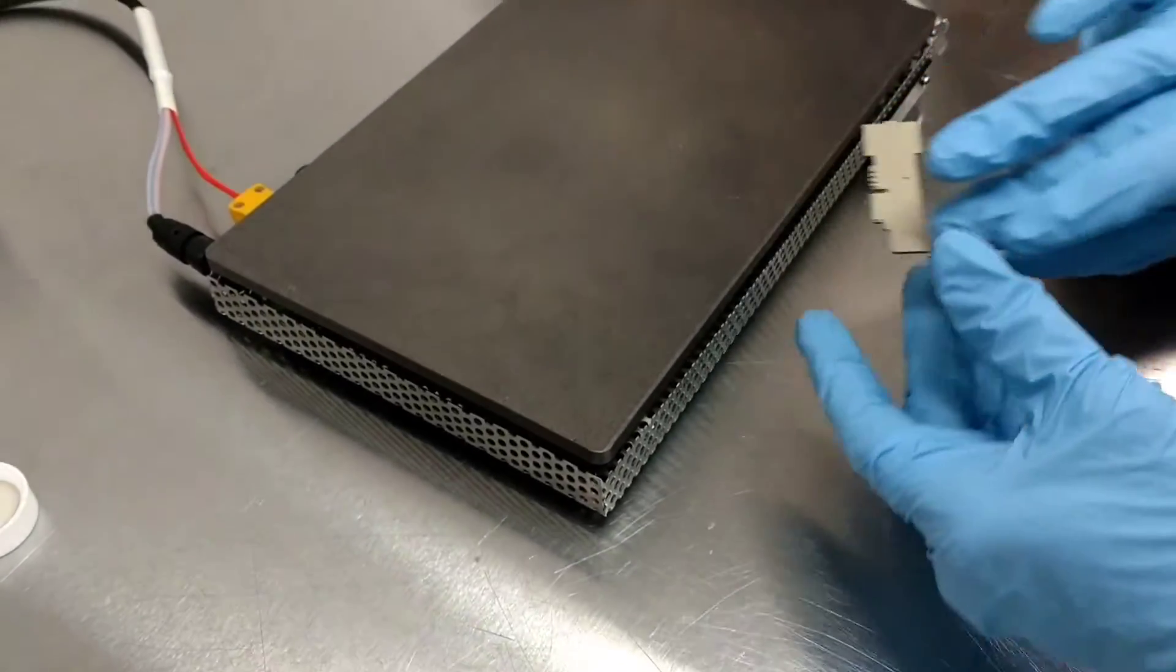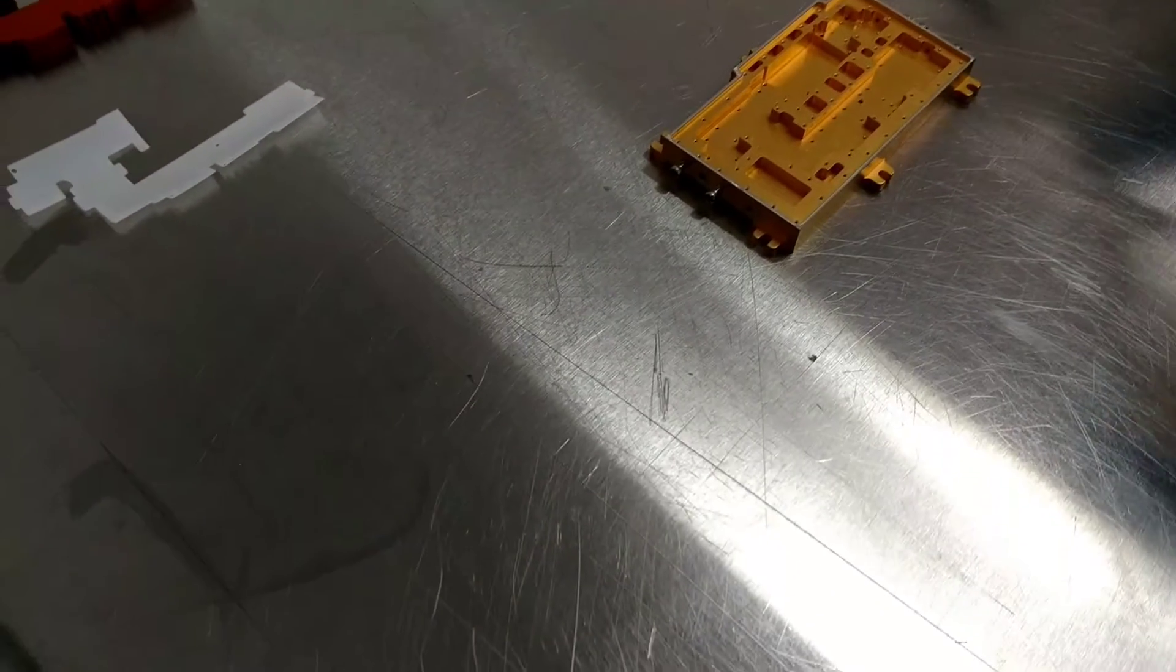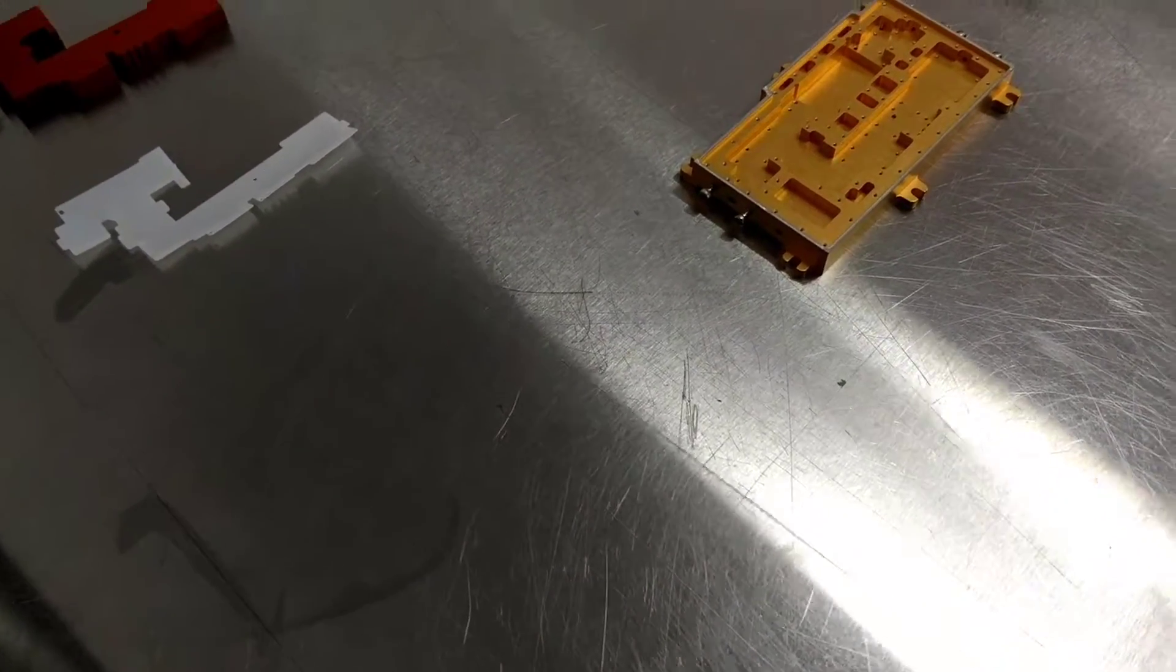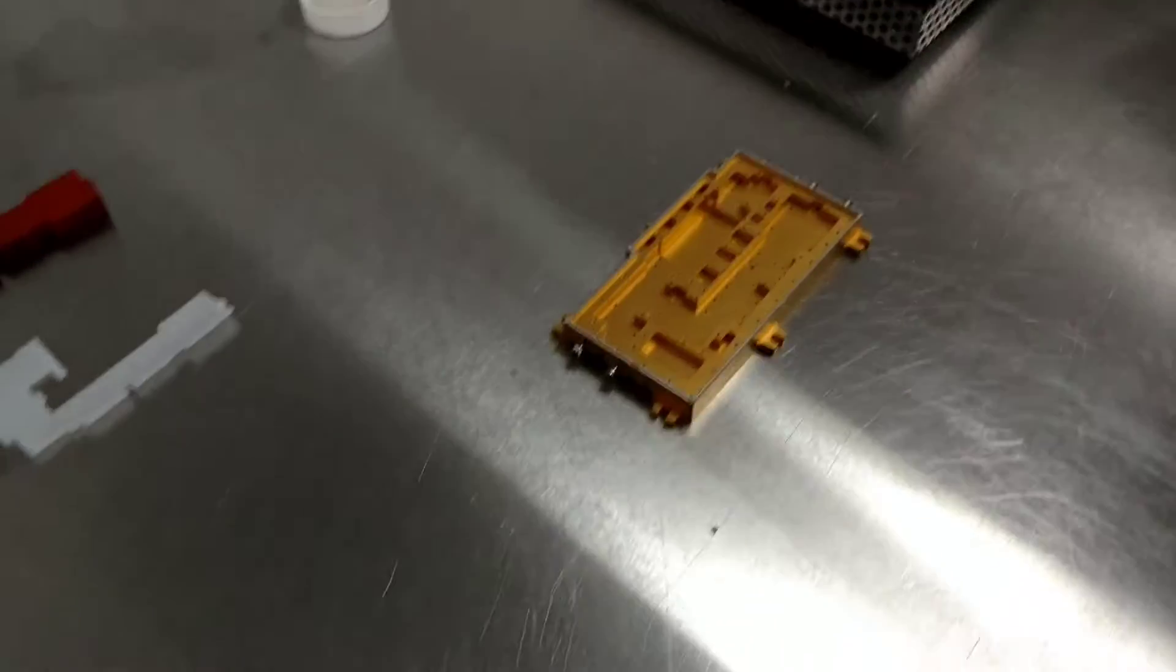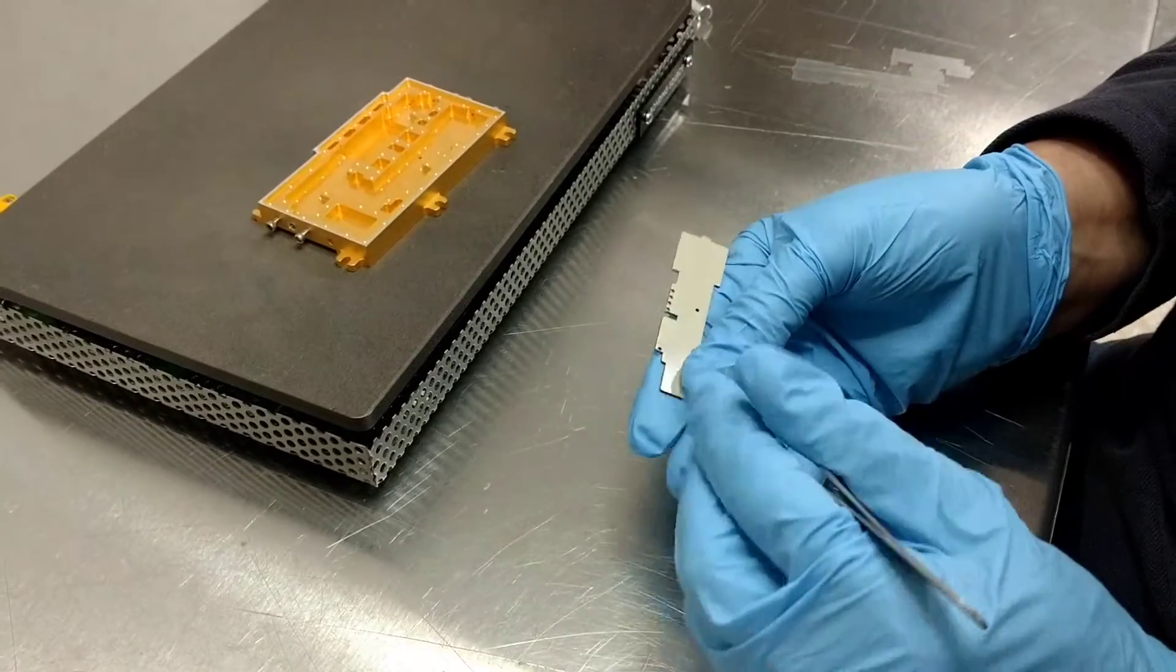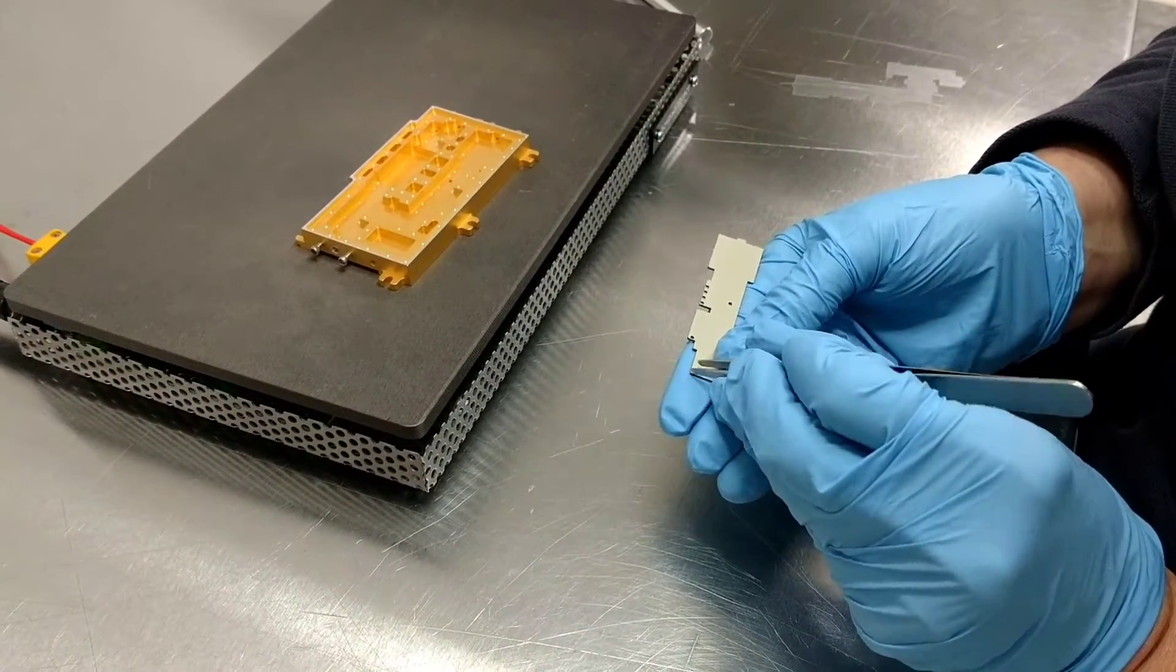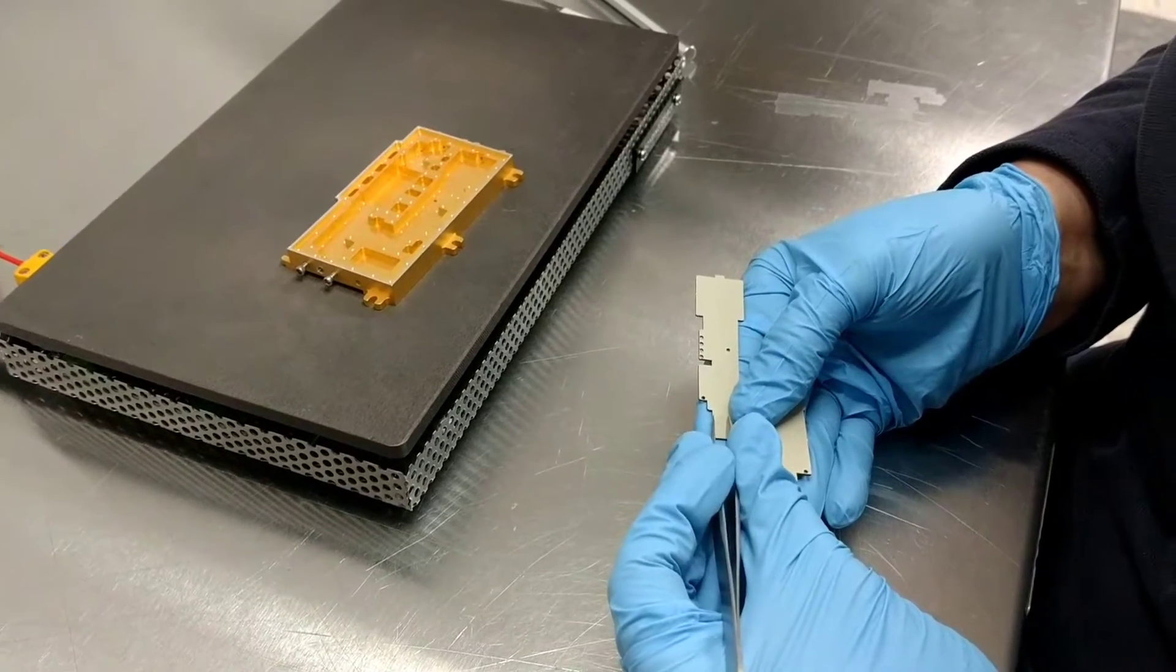And when we know that that's on there good, we then put the housing on. We'll put the housing on so it warms up a little bit. And now we're going to remove the release sheet from the other side that's going to come in contact with the housing.